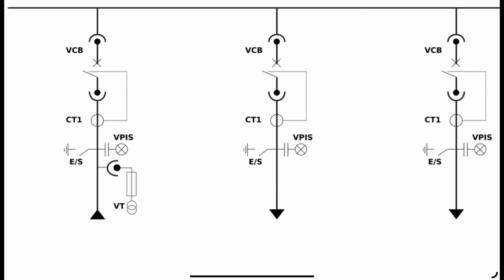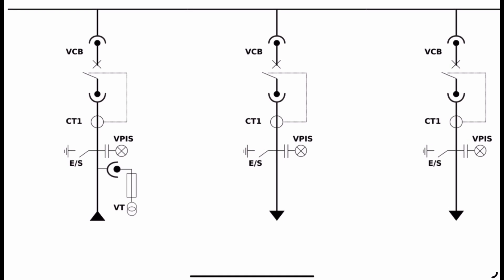Moving further, we have a circuit breaker. This symbol represents the circuit breaker, and it is a Vacuum Circuit Breaker — written as VCB — which is most commonly used in medium voltage switchgear. If you're interested in learning more about vacuum circuit breakers, I have a dedicated playlist linked in the description. This VCB, if you notice, is again wrapped in a bracket symbol, meaning it is a withdrawable-type circuit breaker.